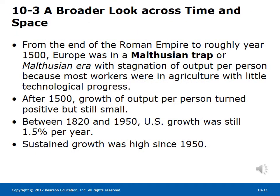Section 10-3: A broader look across time and space. Has output per person in currently rich economies always grown at rates similar to those in Table 10-1? The answer is no. From the end of the Roman Empire to roughly year 1500, Europe was in a Malthusian trap, with stagnation of output per person because most workers were in agriculture with little technological progress. After 1500, growth turned positive but remained small. Between 1820 and 1950, U.S. growth was still only 1.5% per year. Sustained high growth since 1950 is definitely a recent phenomenon.